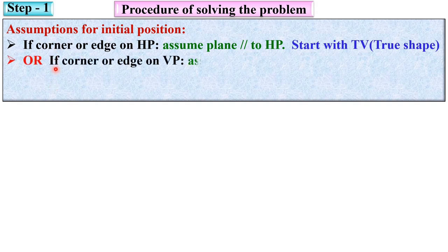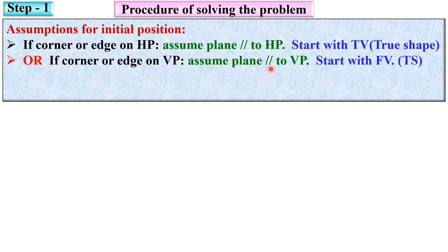Vice versa, if the corner or edge is on the VP instead of HP, then you have to assume the plane is parallel to VP and start with the front view, because if the plane is parallel to VP then you can see the true shape of the plane in the front view.